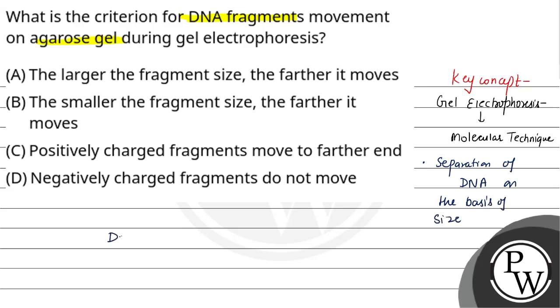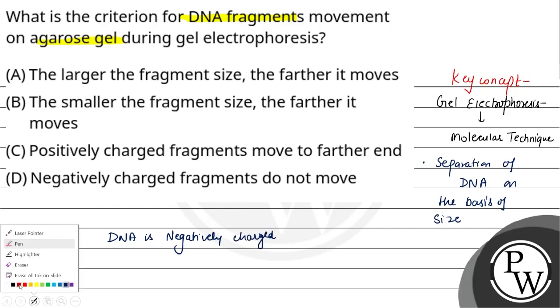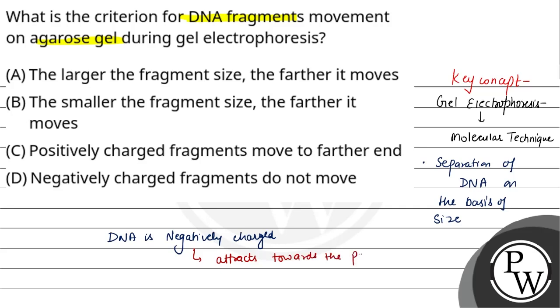Now look at DNA. DNA is negatively charged. DNA, which is negatively charged, will attract towards the positive charge. Where will the positive charge be? Anode. Right?